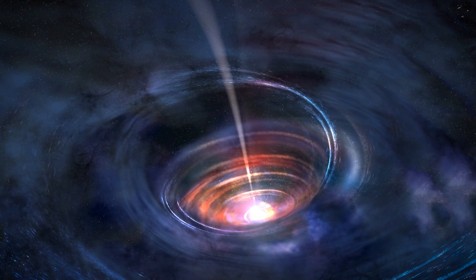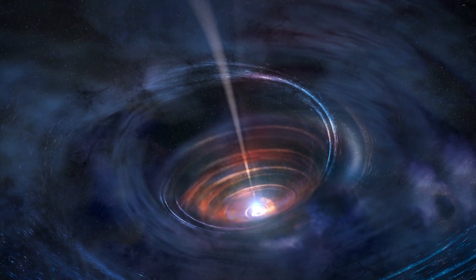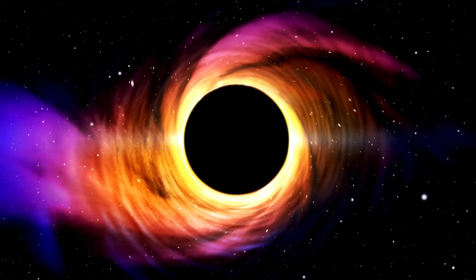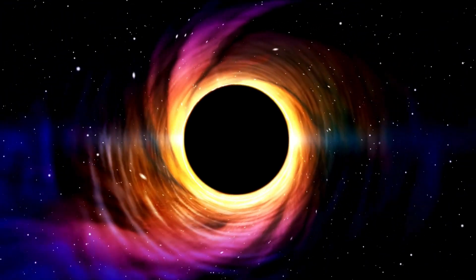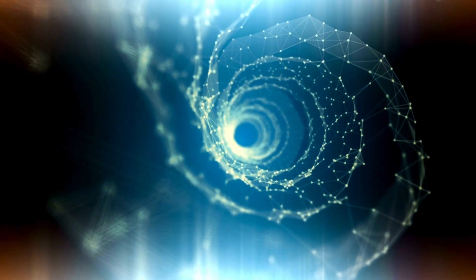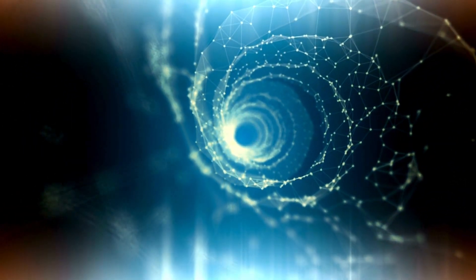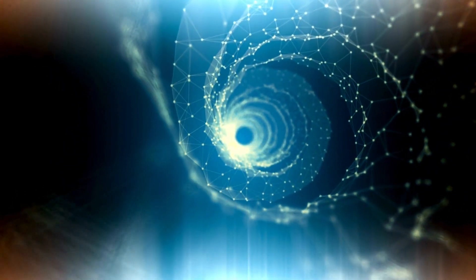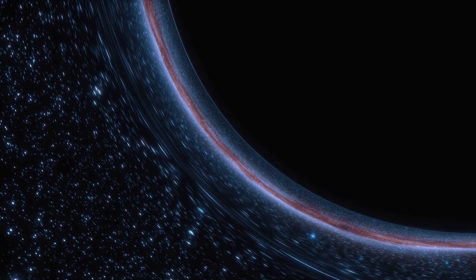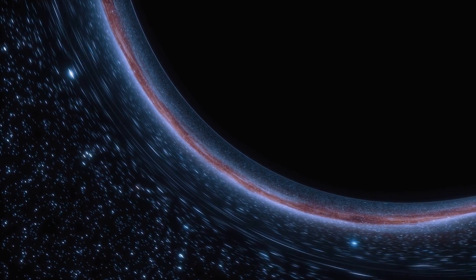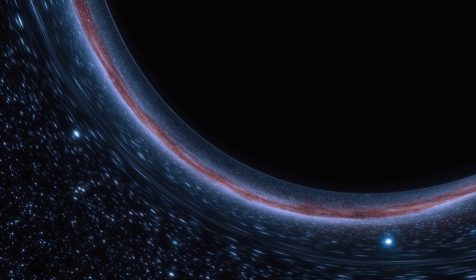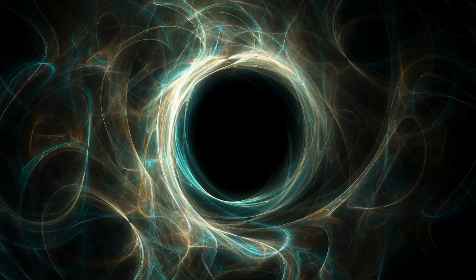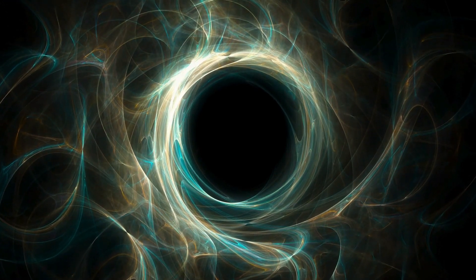But where do black holes come from? Picture this: stars, once brilliant and shining, meet their final end in a tremendous explosion called a supernova. From the ashes of these fallen giants, black holes emerge. Most black holes are born from massive stars that reach their end in a supernova. However, smaller stars, when they die, transform into what we call neutron stars, which are very dense but not dense enough to trap light. However, if a star is many times the mass of our sun, it collapses under its own gravitational force, forming a black hole.